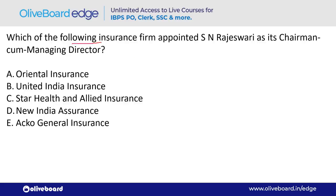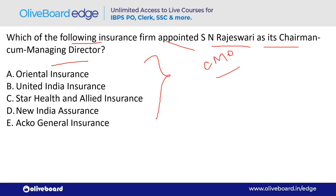Which insurance firm appointed S.N. Rajeshwari as its chairman? The answer is Oriental Insurance — option A. Oriental Insurance's headquarter is in New Delhi.